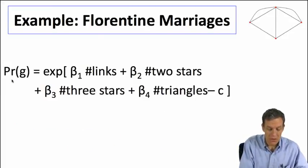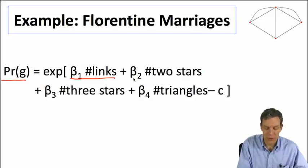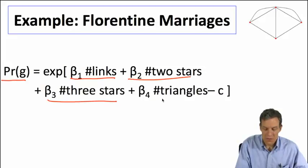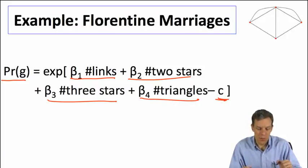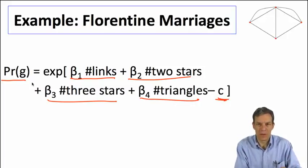We can look at the form here. Probability of a graph is going to depend on these different counts of different statistics. Then there's a normalizing coefficient to make sure that these things are going to add up to be probabilities. So if we sum across all graphs, we get one.